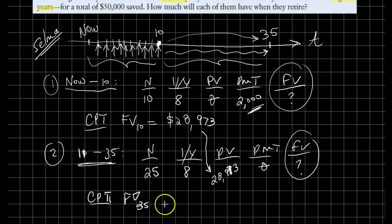We now compute the future value one more time, this time for the end of year 35, and that number comes out as $198,421. That's how much she has accumulated in her account.